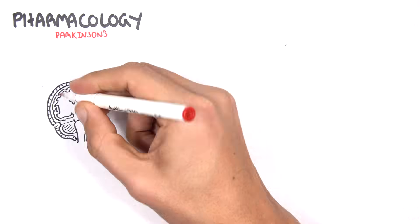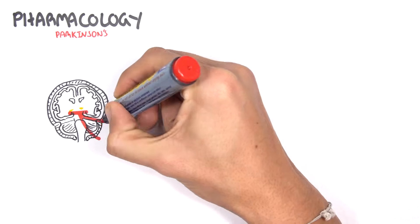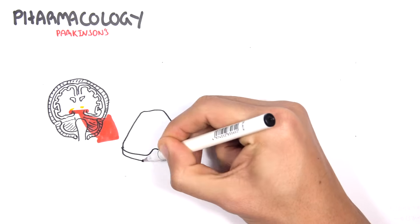Parkinson's disease is a neurodegenerative disease that affects an area of the brain known as the substantia nigra, mainly this area.